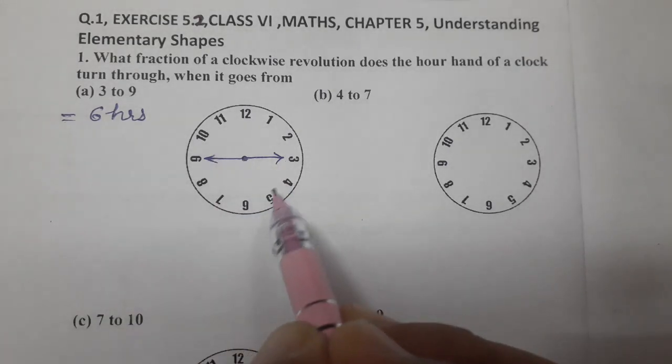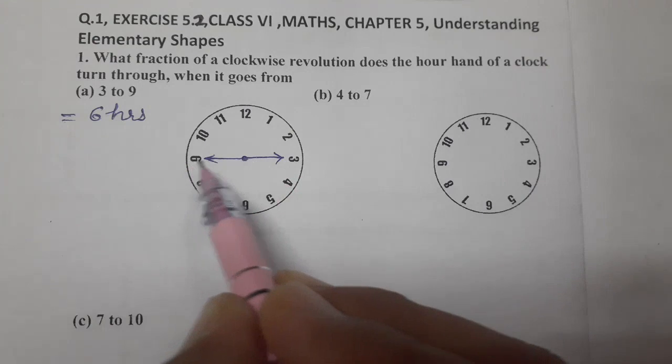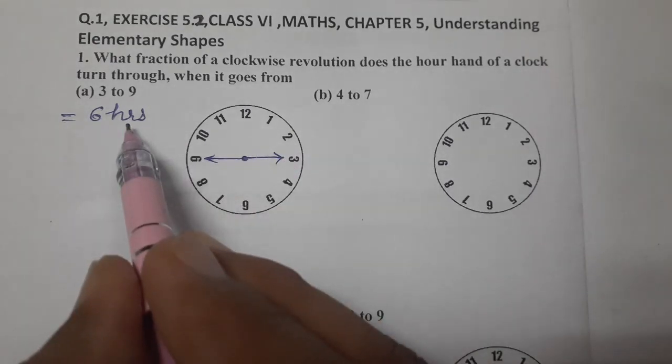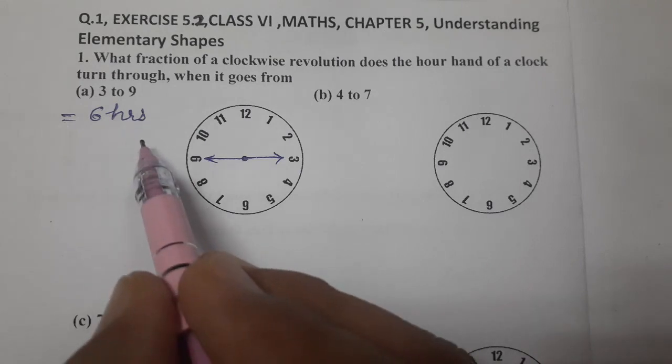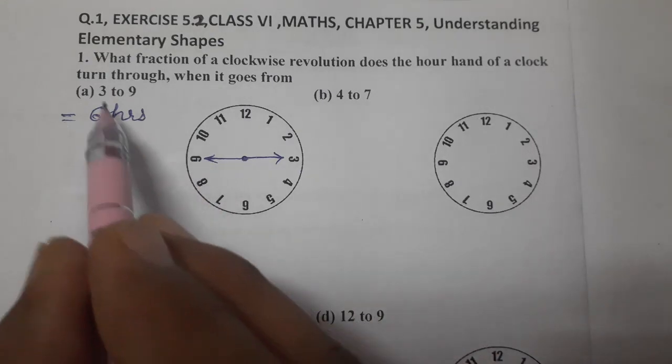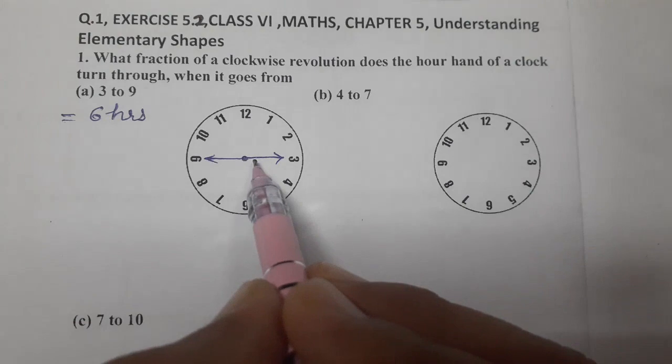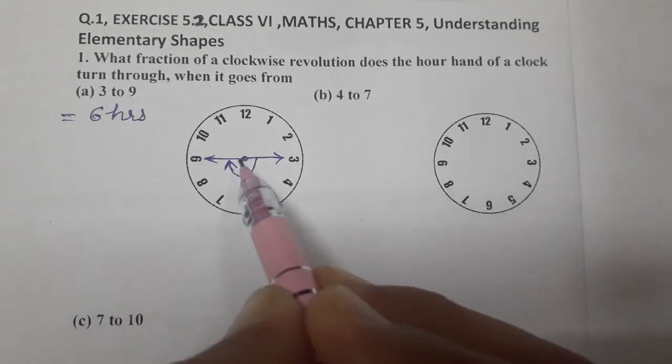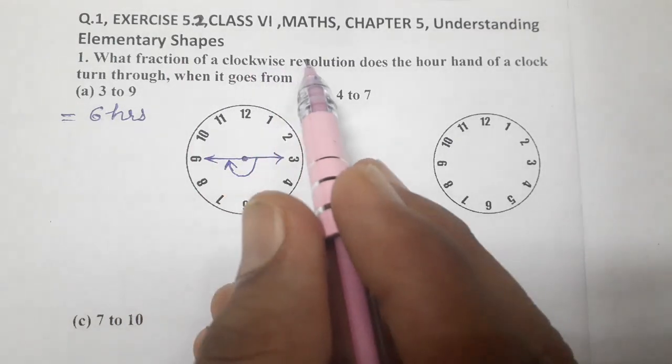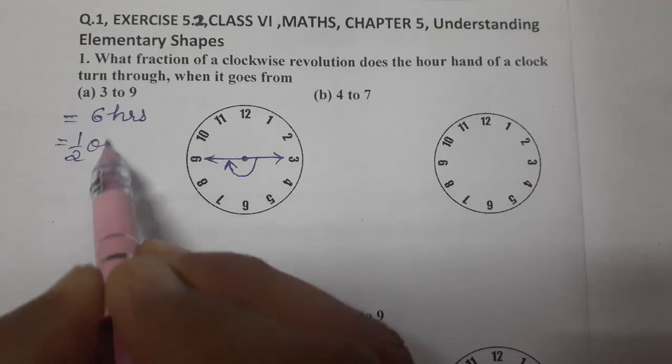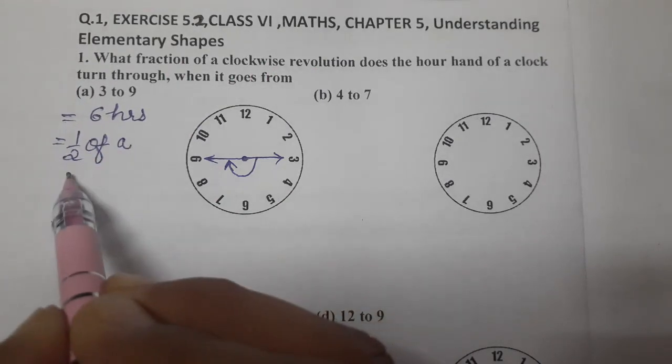So, 1, 2, 3, 4, 5, 6. Whenever 3 hours are there, 1 right angle. 6 hours, 2 right angles. 9 hours, 3 right angles. 12 hours, 1 complete angle. So, 3 to 9, how many hours? 6 hours and in 6 hours, we can see easily that it is what fraction of a clockwise revolution? It is half of a revolution.